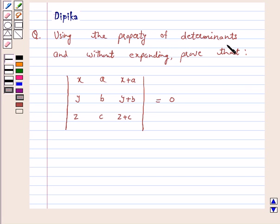Using the property of determinants and without expanding, prove that the determinant with rows x, a, x plus a; y, b, y plus b; z, c, z plus c is equal to 0.